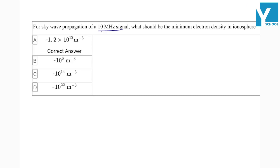For skywave propagation of a 10 megahertz signal, what should be the minimum electron density in ionosphere? So this formula you should know: that fc value is 9 into density maximum whole root, here you can put root here.